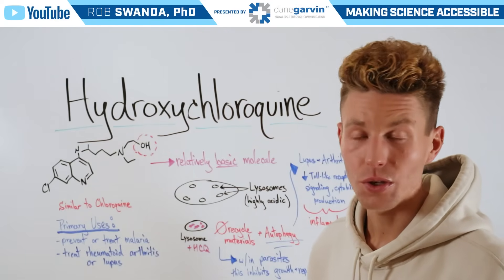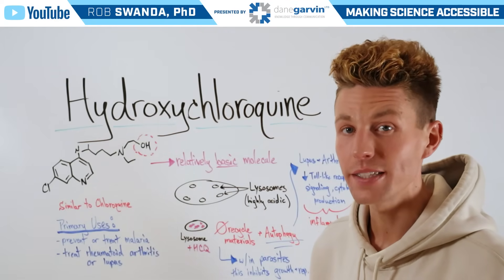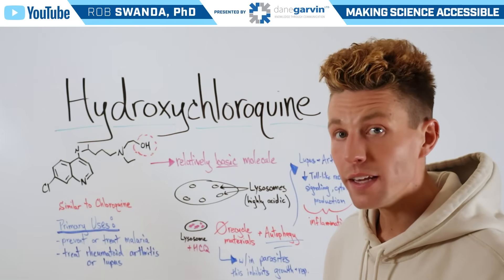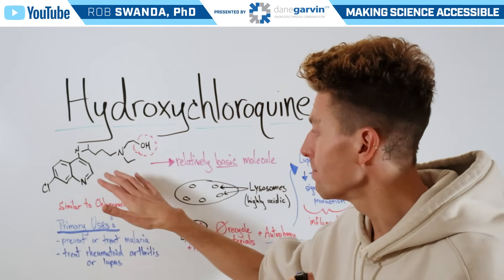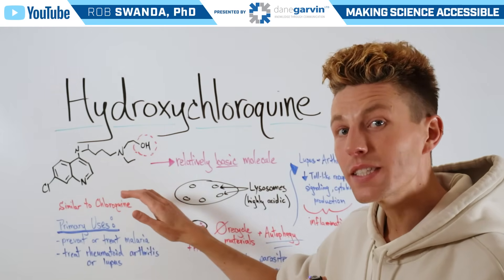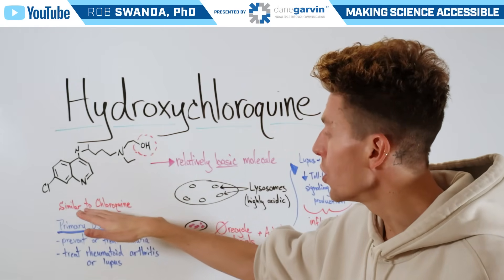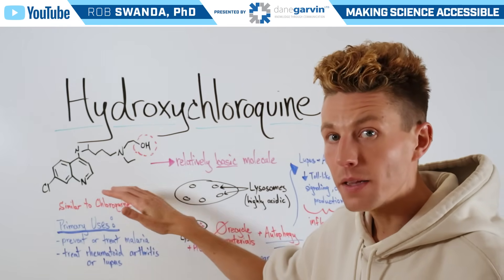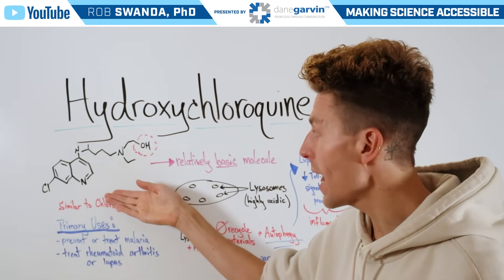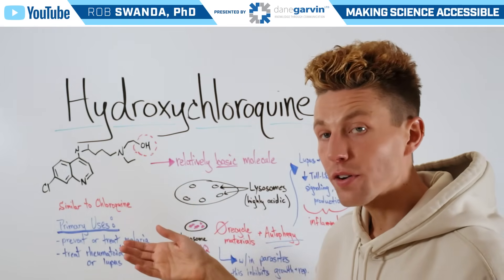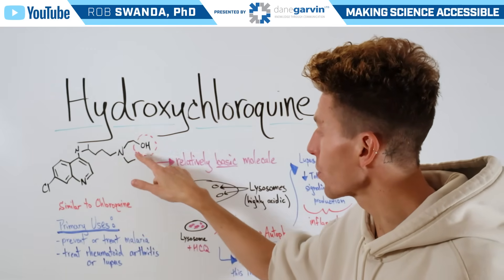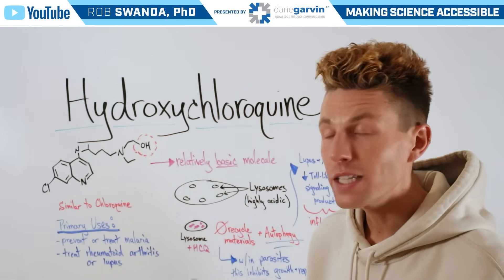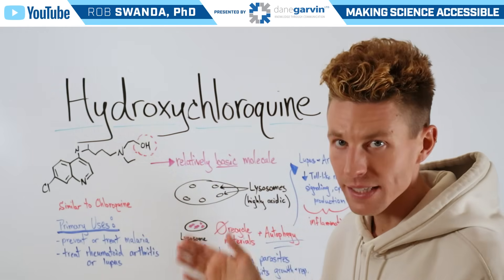Another highly requested molecule for us to break down is known as hydroxychloroquine, which has a molecular structure that looks like this. It's very similar to another molecule known as chloroquine, which has the exact same molecular structure depicted here in black, however it's missing this alcohol group circled in red — or hydroxyl group — and that's where hydroxychloroquine gets its name.